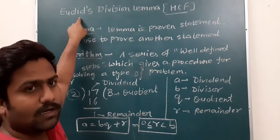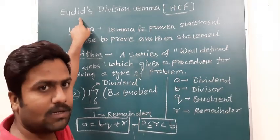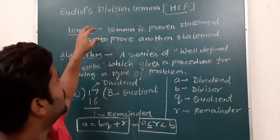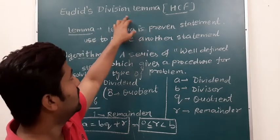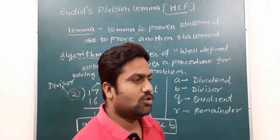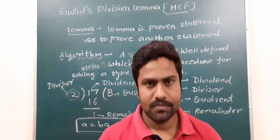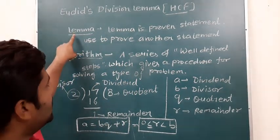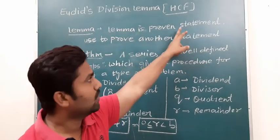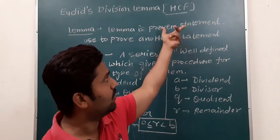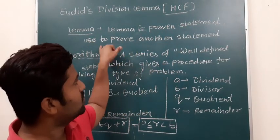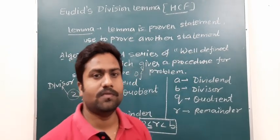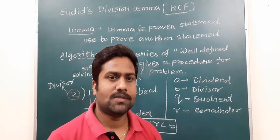Lemma kya hai? Euclid was a great mathematician. The same mathematician has given a lemma related to division. A lemma is a proven statement — it is a proven statement which is used to prove another statement. For example, the angle sum property of a triangle being 180 degrees is a proven result used to derive further results.